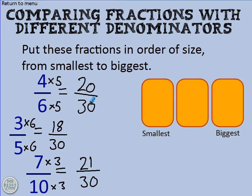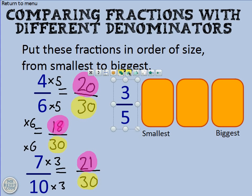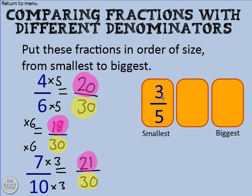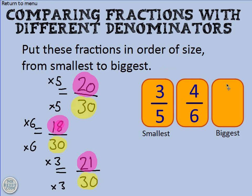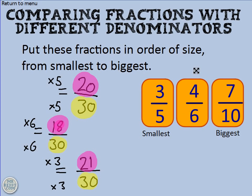And now look — I've got three fractions all out of thirty, which makes it very easy to compare because you just look at the numerators. The smallest is three fifths, equivalent to eighteen thirtieths. The next smallest is four sixths, equivalent to twenty thirtieths. And the biggest is seven tenths, equivalent to twenty-one thirtieths.